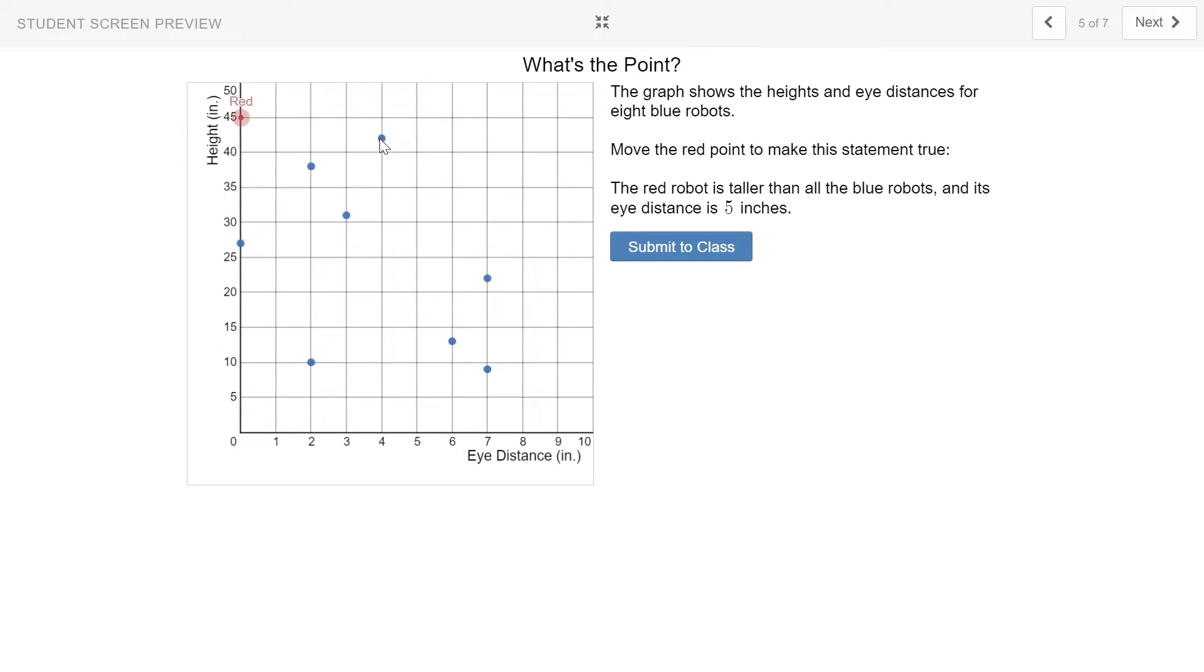Now the second requirement was that its eye distance is 5 inches. So if I slide this red point over to where an eye distance of 5 inches, but maintain its height of 45 inches, I land right about there. When I submit this to the class, my classmates have already put some other points that they believe hit the requirements. Do you think those points hit the requirements as well? I do too.